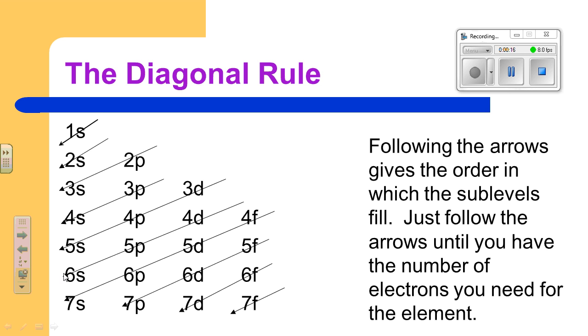We write the s's in one column, numbered 1 through 7. The p's in the second column start on the second line, 2 through 7. D's in the third, starting on the third line, 3 through 7. And then the f's, there's only four possible. We'll only use two of them in the fourth column.